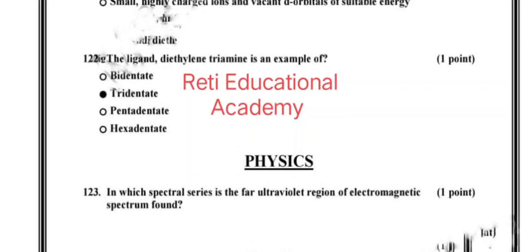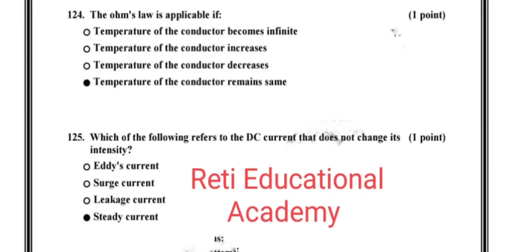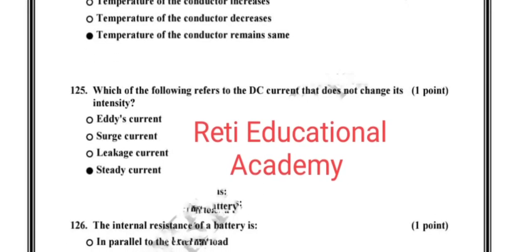Question number 123: In which spectral series is the far ultraviolet region of electromagnetic spectrum found? The correct option is Lyman series. Question number 124: The Ohm's law is applicable if, and the correct option is if temperature of the conductor remains same. Question number 125: Which of the following refers to the DC current that doesn't change its intensity? The correct option is steady current.